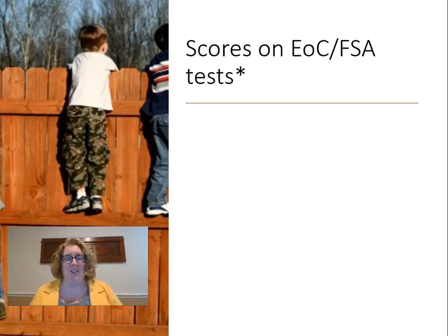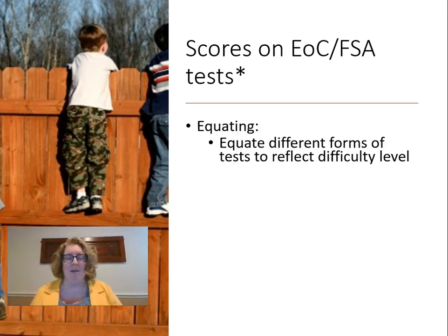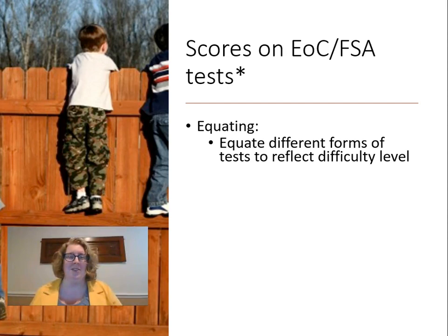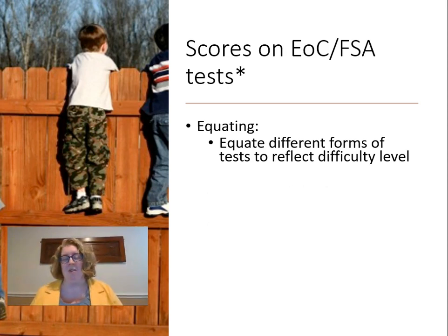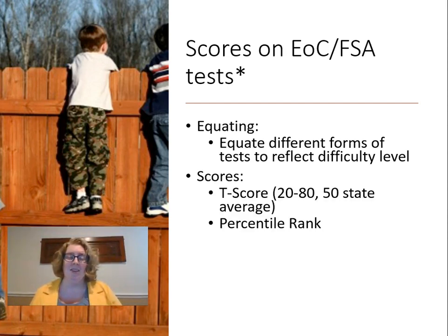Let's look at what the scores on the EOC or FSA tests look like. Even though tests across grade levels are different — the third grade test is different from the fourth grade test — they have vertically aligned those tests so we can give a score on the third grade test that equates to a score on the fourth grade test. That growth or development score allows us to compare growth from year to year. They also give a T-score and a percentile rank, so even though these are criterion-referenced tests, we're giving them a norm-referenced score on the FSAs.